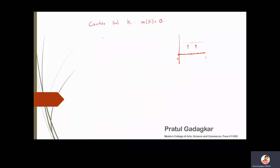This means that f is 0 almost everywhere. By definition, a function is 0 almost everywhere if the set on which the function is not equal to 0 has measure 0. That set is exactly the Cantor set K, where the function is not equal to 0.